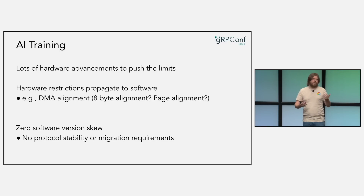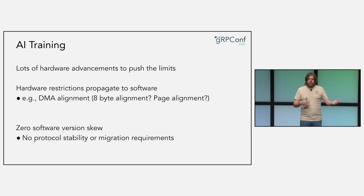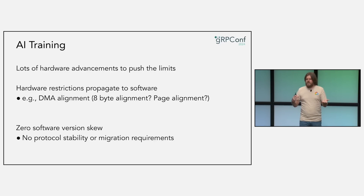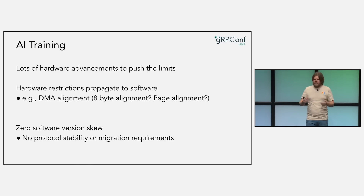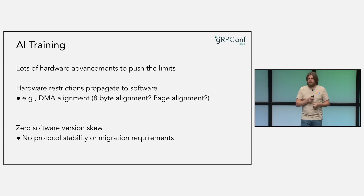There's also zero software version skew — this is the one saving grace. We're still supporting gRPC 1.0 in the sense that an ancient client can still talk to a new server. In this case, the software isn't lasting long before it's updated — it's very rapid, everyone's pushing new versions, so there's either zero or very little version skew. That means protocol stability doesn't matter as much, where classically that's something very important to gRPC.